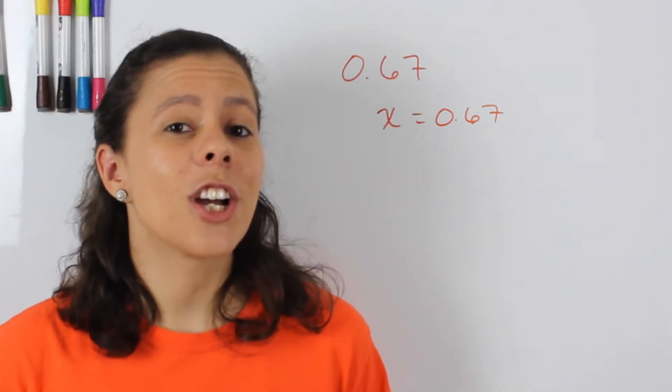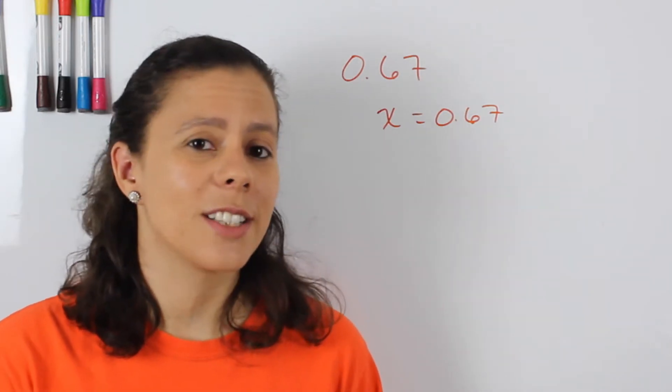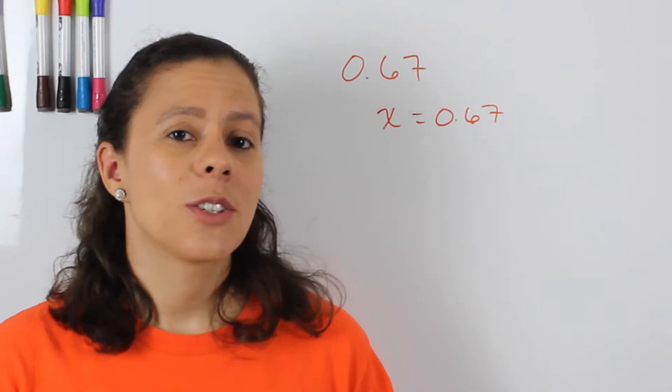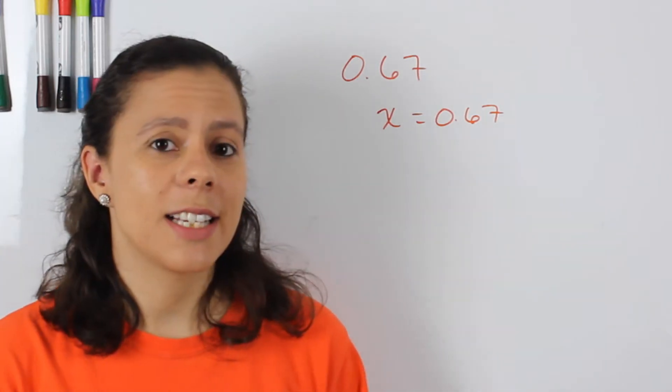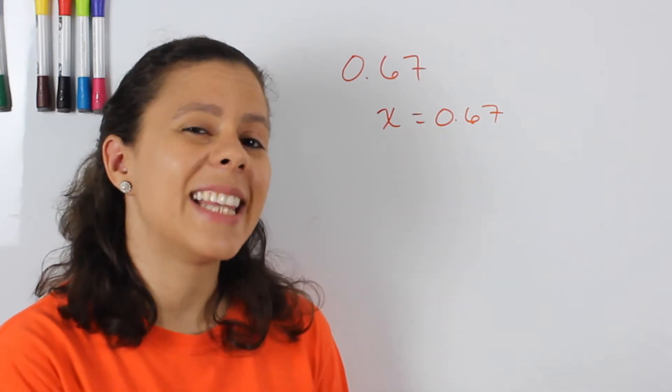Remember that fractions are just numbers. So they still have to abide by the same rules of multiplication, division, addition, and subtraction. So we have that .67 is equal to x. So what we want to do is we want to get rid of that decimal point.